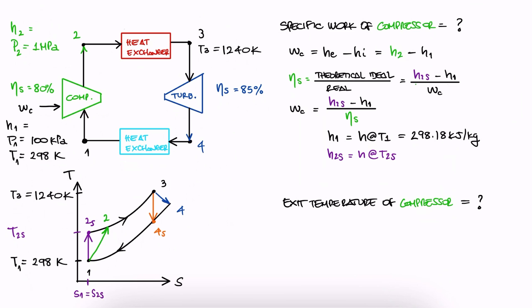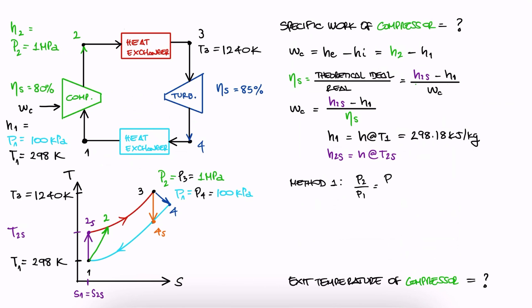We have two options here to find state 2S. Since we have the pressure values at 1 and 2, we can use the relationship between P's and PR's, or we could use the entropy change expression and say it should be 0, since from 1 to 2S we assume isentropy. Let's go with the first option since it's quicker.